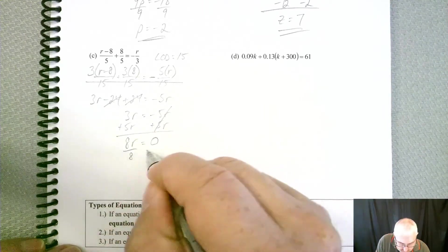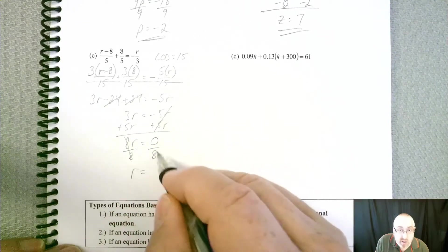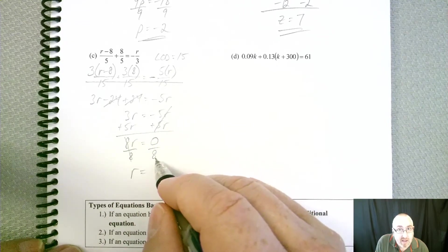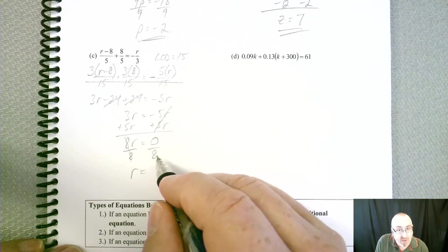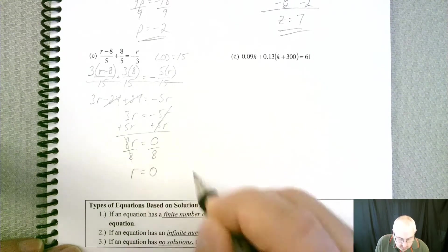8's cancel. Zero divided by 8. We can do that. Zero on the bottom is bad, but zero on the top is okay. So that should be equal to zero.